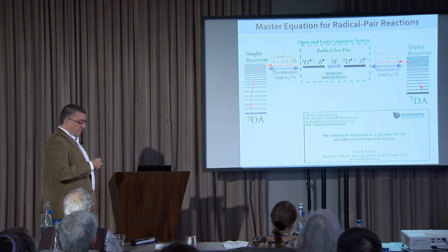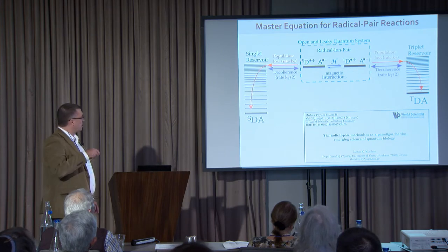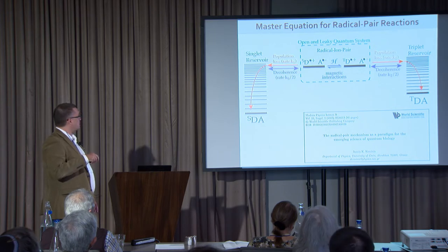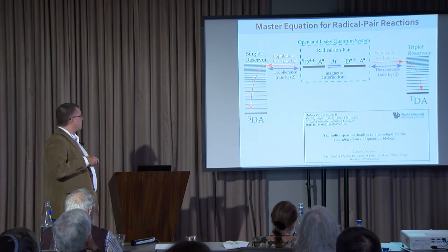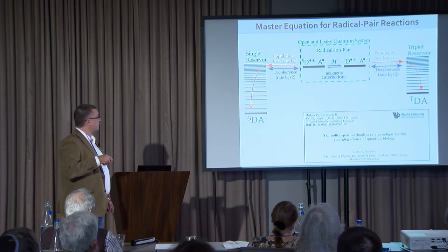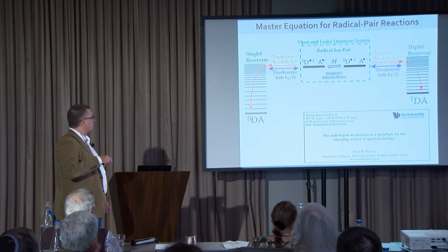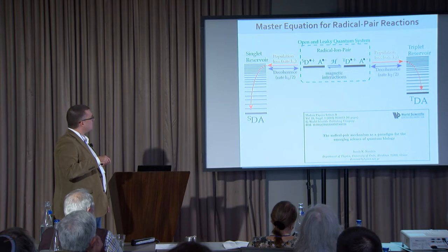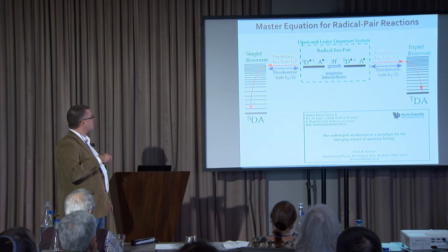We have applied the theory of open quantum systems and revealed the role played by the vibrational reservoir. The radical pair sits up here on the energy scale but the neutral products sit down here, and to go to them there is a vibrational reservoir. That has two roles: one accounts for the leaky character of the radical pair — all radical pairs react away and produce products at the end, either singlet or triplet — but we have shown that this same reservoir can produce decoherence by virtual jumps, transitioning from the radical pair to the reservoir and back.